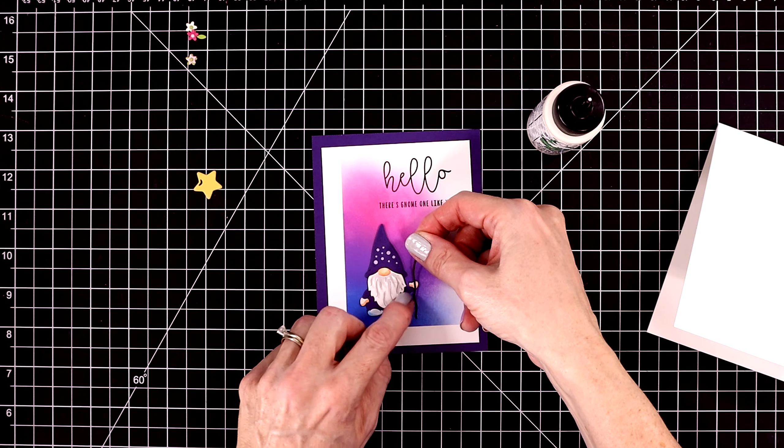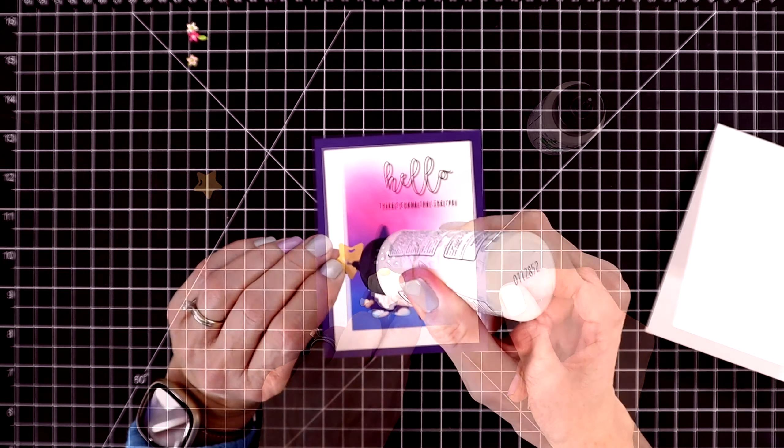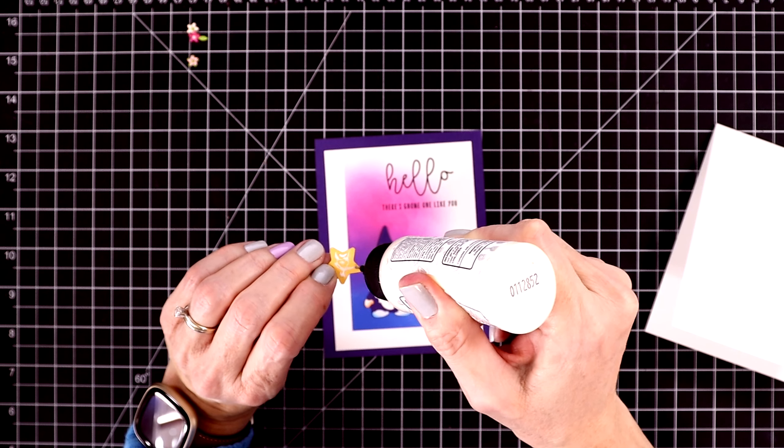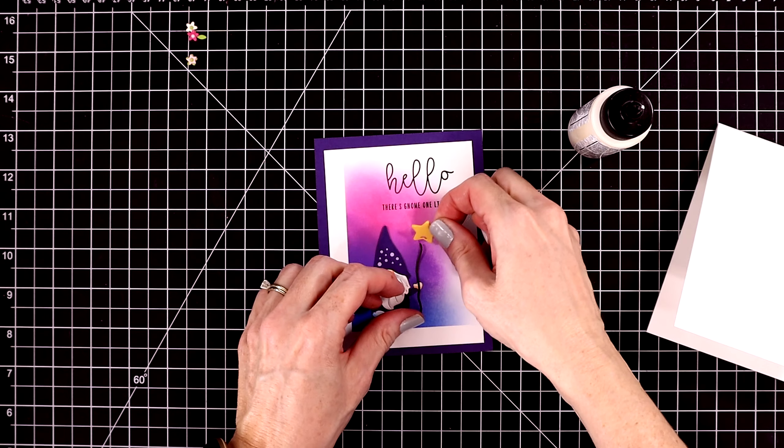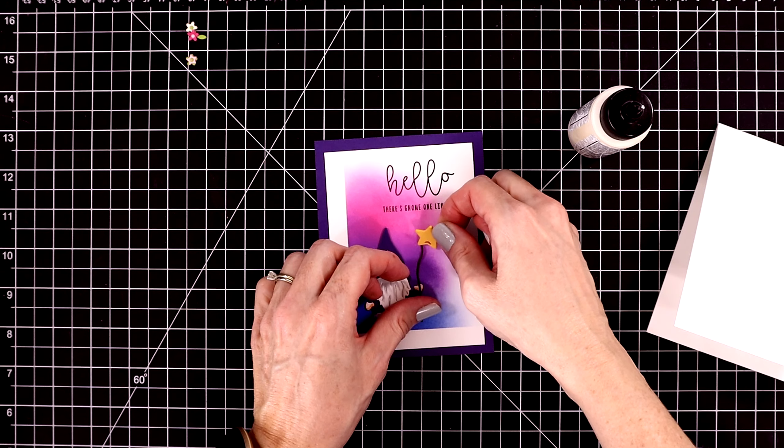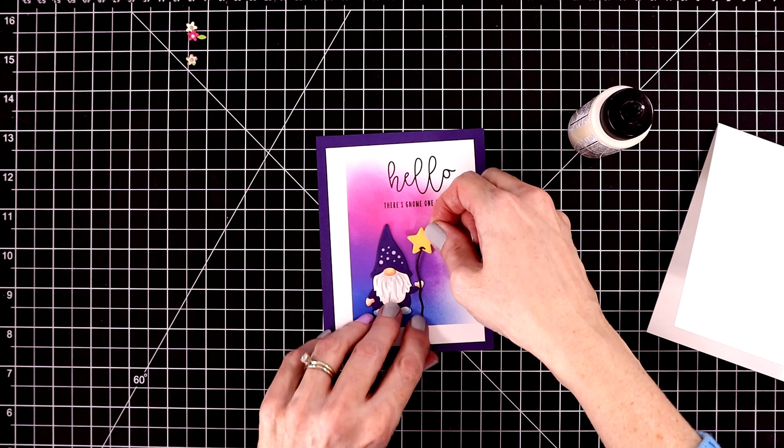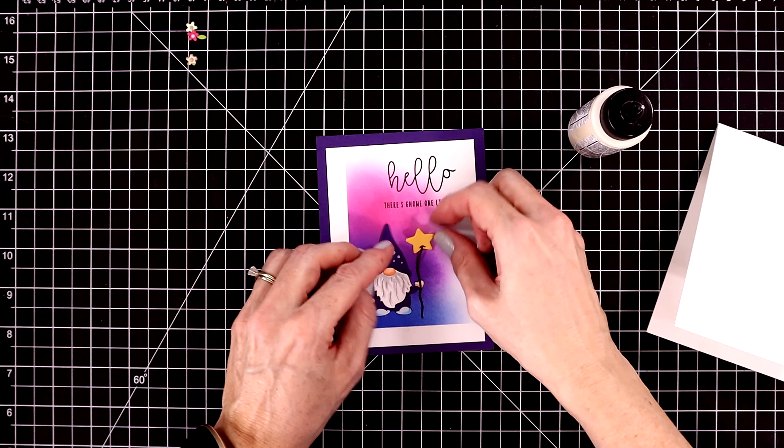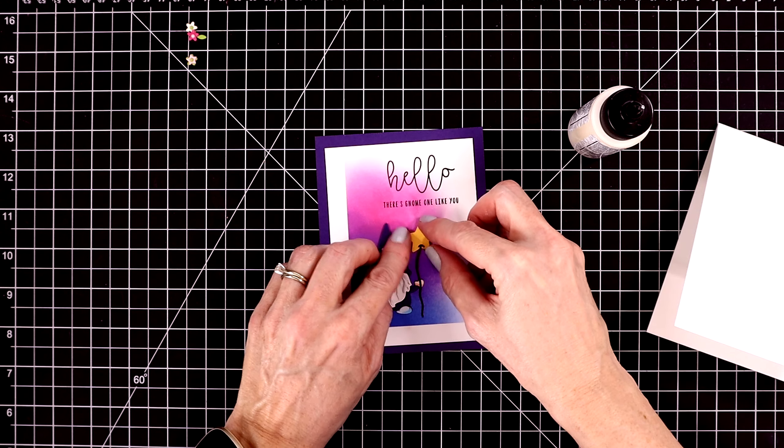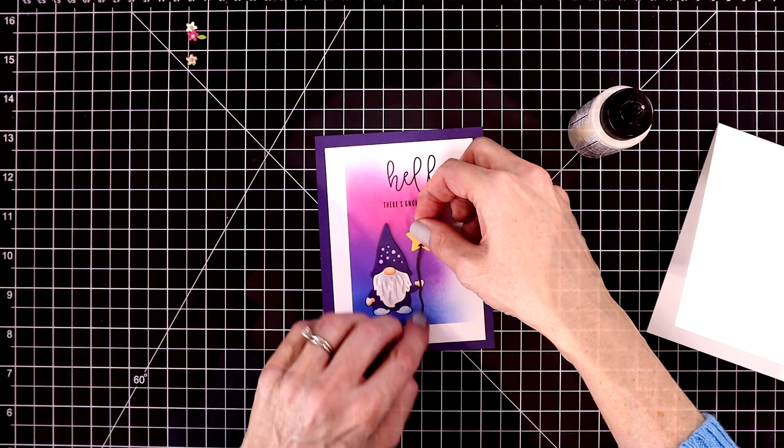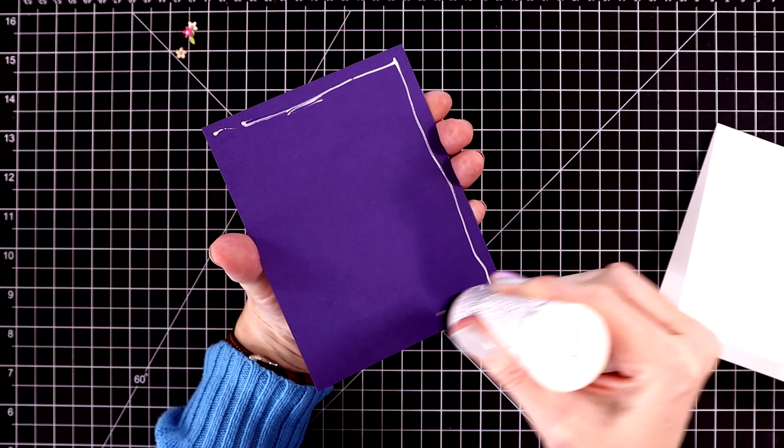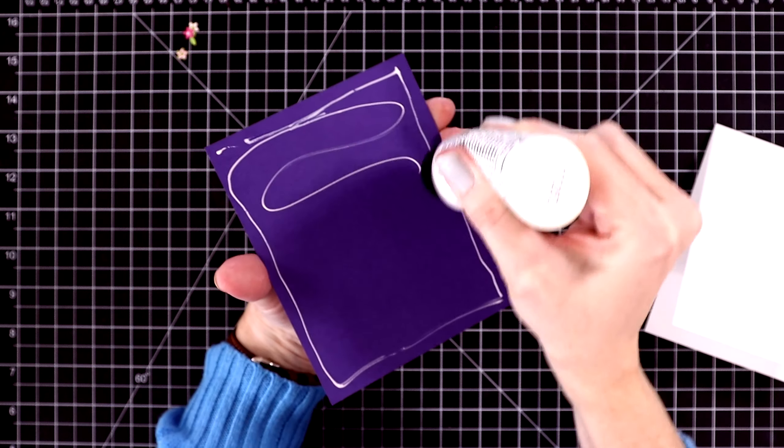He just looks so cute in front of that background. Then I'm going to put a little glue on his hand so that I can attach his staff, and then the star I'm going to put right above it. There's a little slit in it so that you can put the staff inside it. I did double up on the star and the staff just to give them a little more stability.